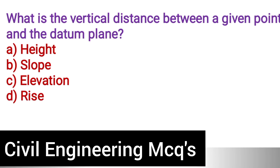Next question: What is the vertical distance between a given point and the datum plane? Option A: Height. Option B: Slope. Option C: Elevation. Option D: Rise. The correct answer is option C, elevation.